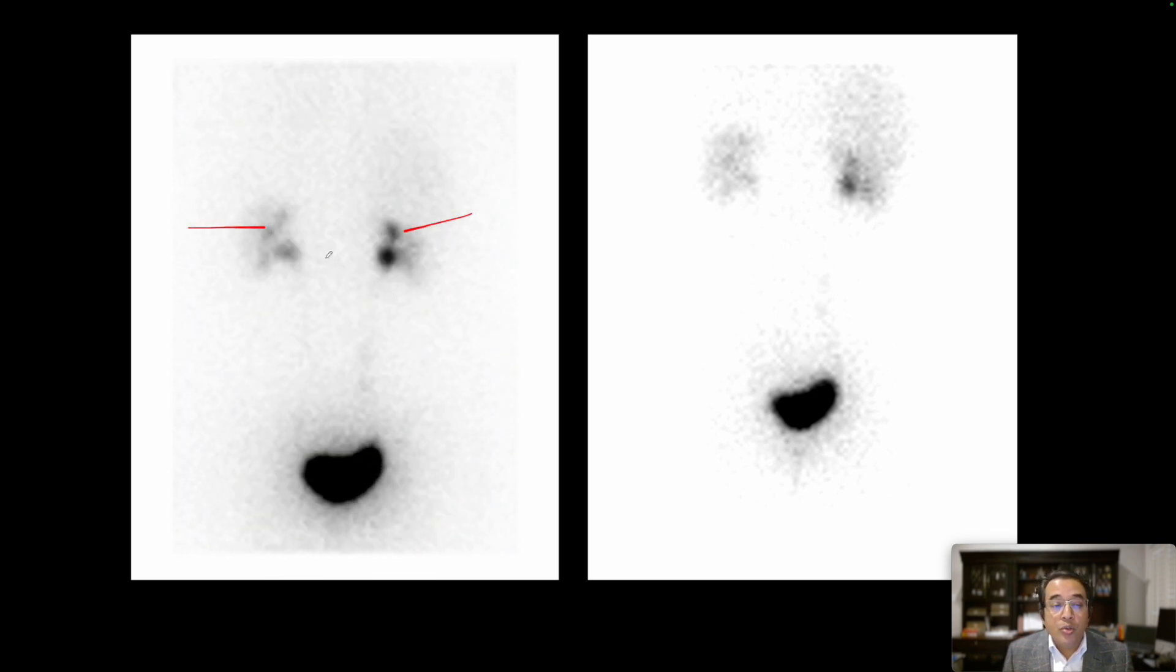And then the nephrographic images, one minute per frame in the posterior projection, showing good excretion of the tracer from both kidneys into the urinary bladder.